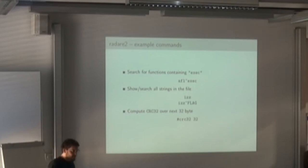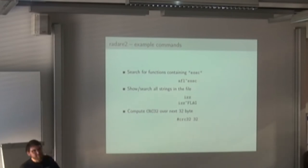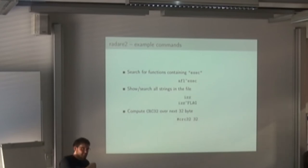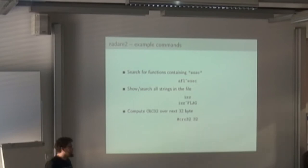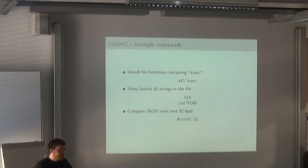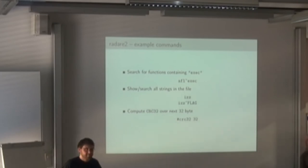Just some examples of what Radare can do. It has a really cryptic command line, so it's not really easy to use, but if you're used to it you get pretty fast. You can use the AFL command with a tilde — it's a built-in grep — so you can grep the functions that contain 'exec,' which might be interesting. Or you can search for strings in a binary. Of course there's also the strings tool, but Radare does it more fancy. Also other things like computing CRCs over, let's say, the next 32 bytes. One time I fixed a PNG file which had broken CRC sums — I just popped into Radare and fixed all the CRC sums manually, no problem.